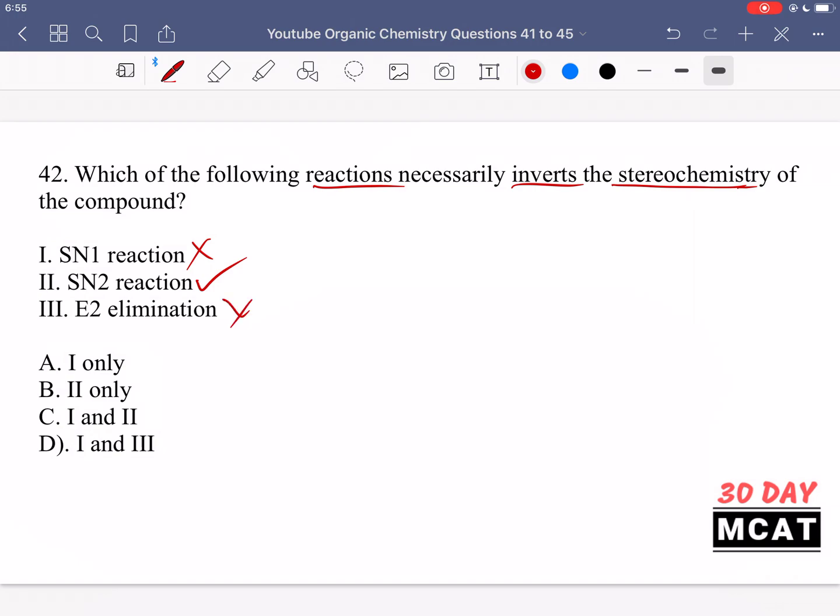Same with E2. What E2 does is it removes the leaving group and also removes the hydrogen, giving us a double bond. Therefore, we don't have that original stereochemistry and we don't have a new stereochemistry—we don't have either R or S. That's different and not the same as inverting stereochemistry, so it's going to be only SN2 reactions for this question.